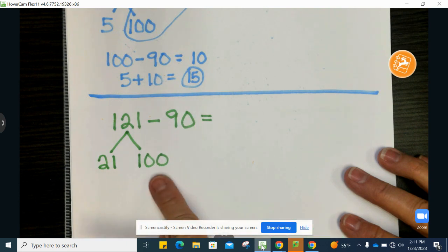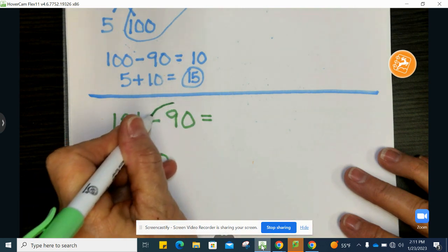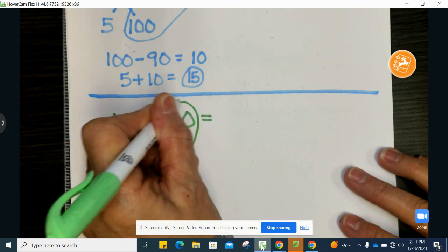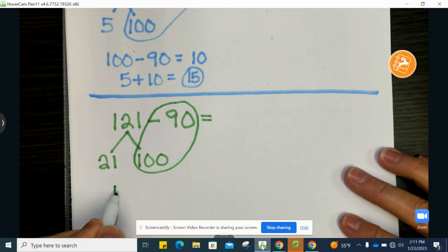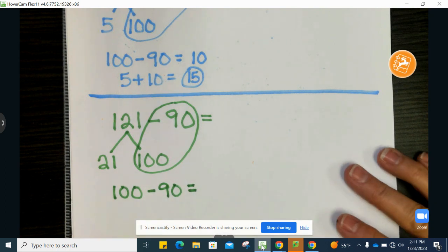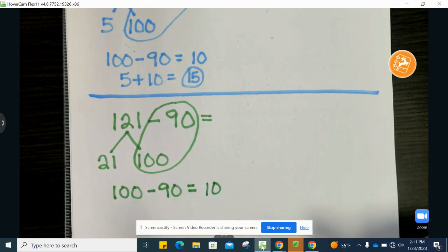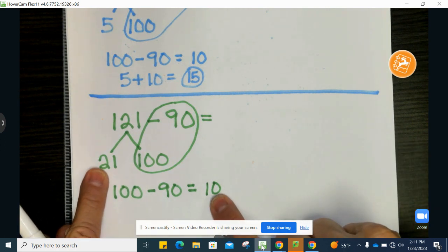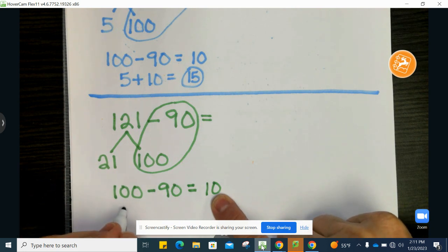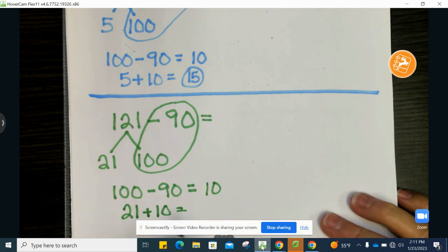And now I'm going to subtract these two parts. I'm going to subtract 90 from 100. And remember the largest number always goes first when you are subtracting. 100 minus 90 equals 10. And then I want to put back these parts together. So 21 plus 10, or you could write it 10 plus 21.